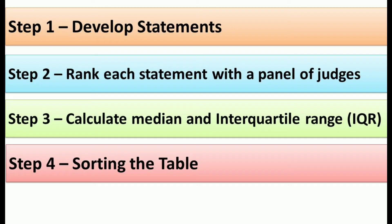After calculating the median and interquartile range, the next step is to sort or arrange the table. The data should be sorted on the basis of smallest to largest median, that is in ascending order. The interquartile range for each median is to be arranged in descending order, that is largest to smallest. So the median should be arranged in ascending order and the interquartile range in descending order.